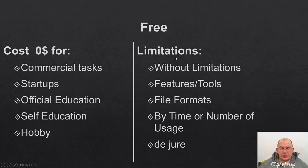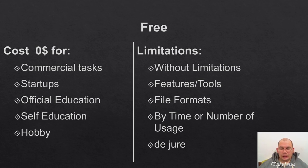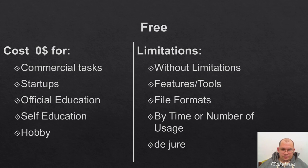An additional type of license some products offer is for official education processes — for high schools, universities, and so on. If you are a teacher or educator at a university, or an administrator, you can buy or obtain an educational license with very large discounts or even for free. It depends on the type of license, the product, the company, and what product you want in your educational process. We will talk about this later.